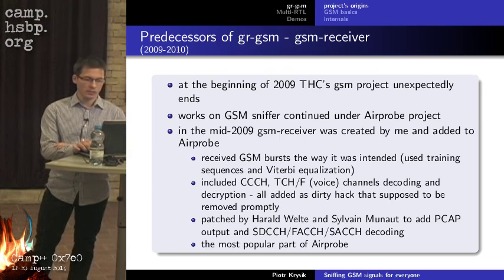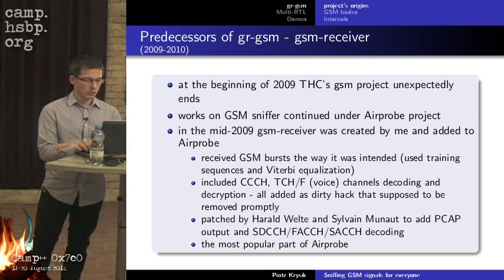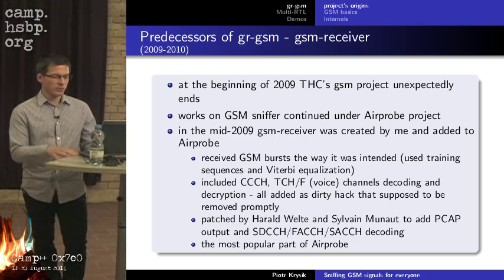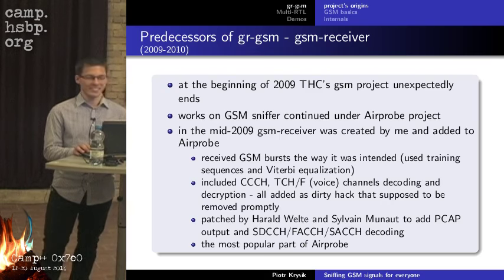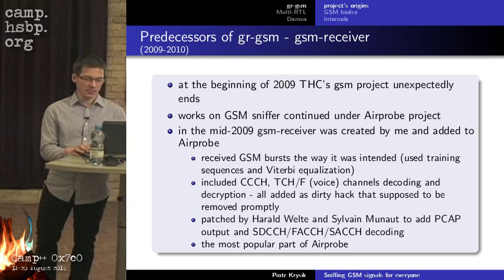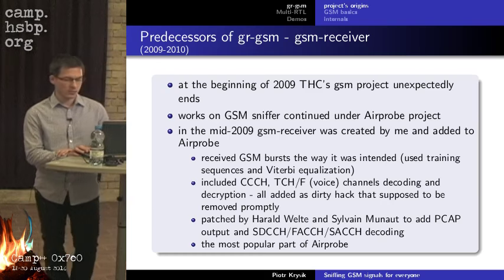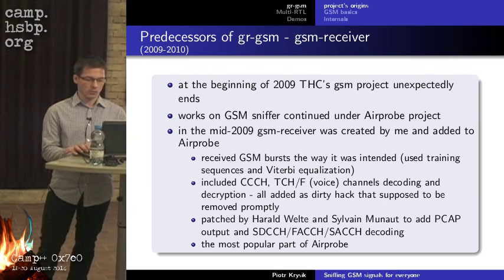It included decoding of control channels — common control channel and traffic channel — hacked on top very fast and supposed to be removed quickly, but it stayed. The code was also parsed by Harald Welte and Sylvain Munaut to add the ability to analyze messages in Wireshark, and they also added support for decoding other control channels.